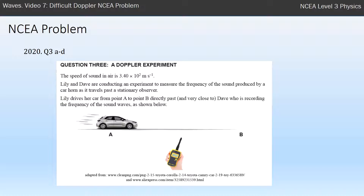there's a question on standing waves and pipes or strings, and there's a question on diffraction gratings and interference patterns. So it's very easy to predict what the three questions are, but I find it's the hardest for students to get excellences because every so often they throw in quite a complicated Doppler effect question or quite a complicated interference pattern question. So this is an example of a complicated Doppler effect question.